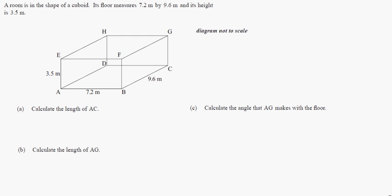A room is in the shape of a cuboid. Its floor measures 7.2 meters by 9.6 meters, and its height is 3.5 meters. Calculate the length of AC. So they want us to calculate AC here. Now, I know this doesn't look like a right angle, but it is because it's a cuboid, so that's kind of the trick part there that you know that that's a right angle.